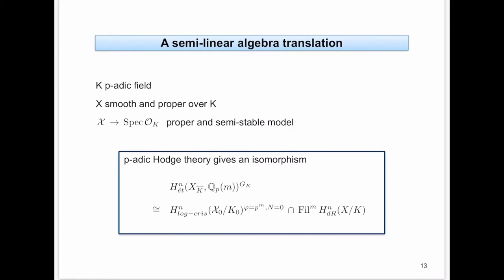If you look at the nth étale cohomology of X over K-bar with Tate twist by m and take Galois invariants of the absolute Galois group of K, then p-adic Hodge theory identifies this with log-crystalline cohomology of the special fiber. You take invariants where Frobenius acts like multiplication by p^m and N — the monodromy operator — equals zero, intersected with the m-th piece of the Hodge filtration.